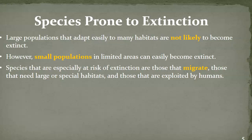When we talk about species prone to extinction, we think about those populations of animals that are smaller. Large populations that are easily adaptable are not likely to become extinct. But organisms that are specific to one habitat or already have smaller numbers can easily become extinct if we are not careful. Those especially at risk are the ones that migrate, because they require specific areas to lay eggs or find their food sources — and those are the habitats being exploited and destroyed by people. When those organisms return to lay their eggs, it's no longer an option for them.